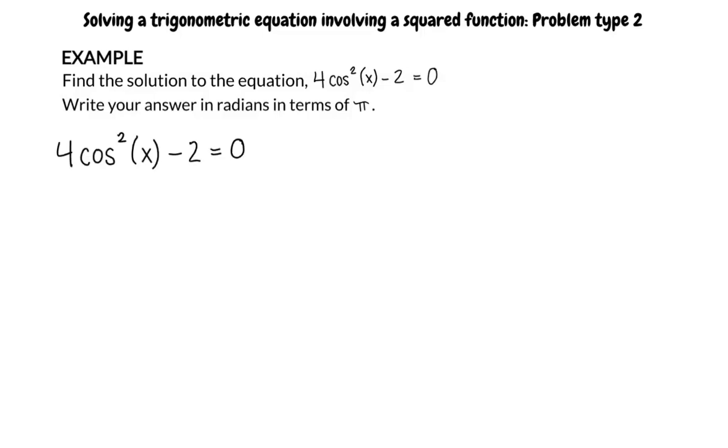In order to find the answer, we need to solve for x. First, we add 2 to both sides of the equation and write 4 cosine squared x equals 2.